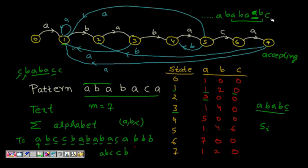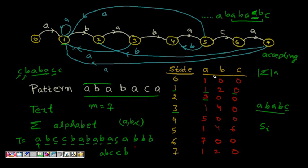This state machine is run over the text. If you reach state 7, the whole pattern has matched. The table has dimensions: size of the alphabet multiplied by the number of states, where the number of states equals the length of the pattern plus one. The most important part is constructing this finite automaton — after that, you simply pass your text through it and it automatically gives you the match.